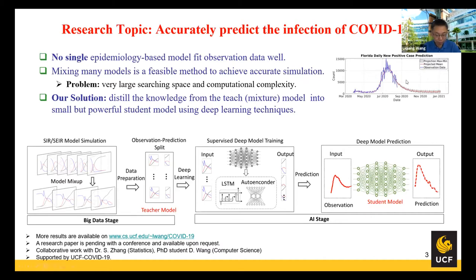This approach cannot only handle COVID-19 prediction, but could also be useful to improve conventional physical data-driven models widely used in many engineering fields. Similar to the COVID-19 case, if a complex physical data-driven model exists, we could distill its knowledge into a small neural network that works more efficiently and even has better performance than the original teacher model.